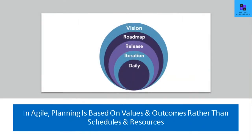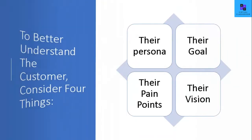The first tip is all about having the 5 levels of planning. Your sprint will fail if your sprint goal is not aligned with the product roadmap. In Agile, planning is based on values and outcomes rather than schedules and resources.